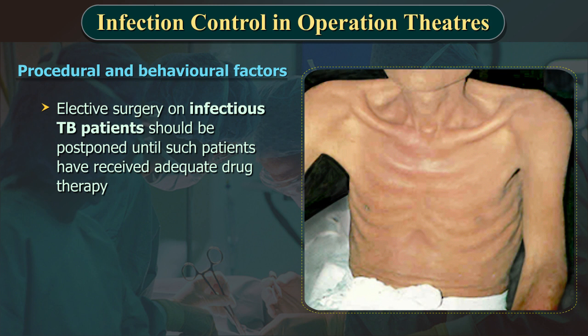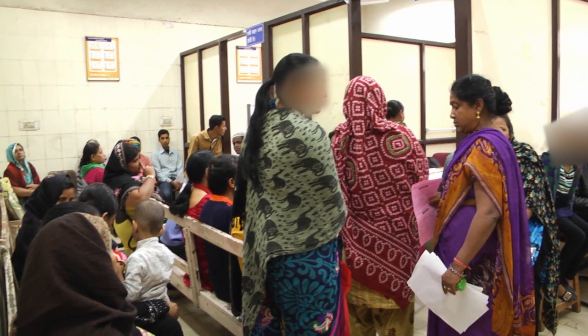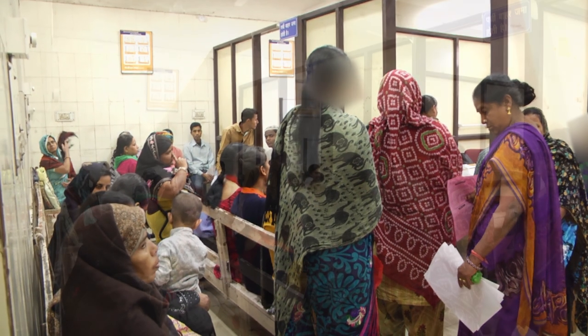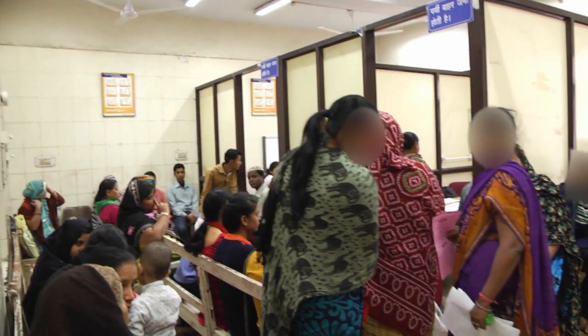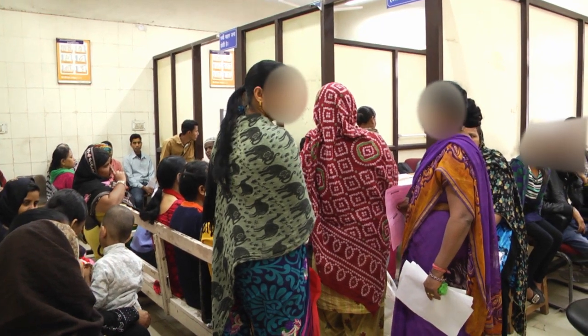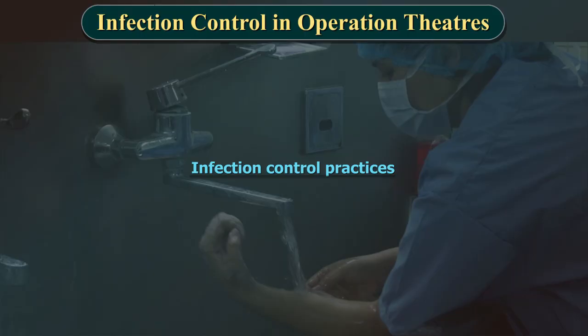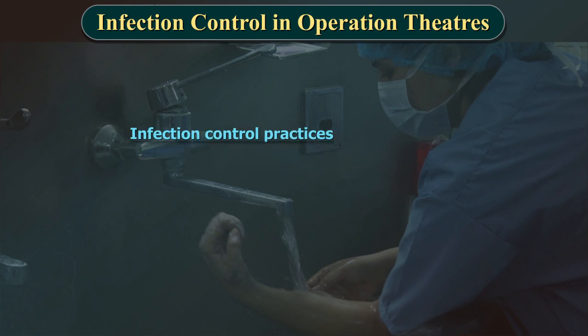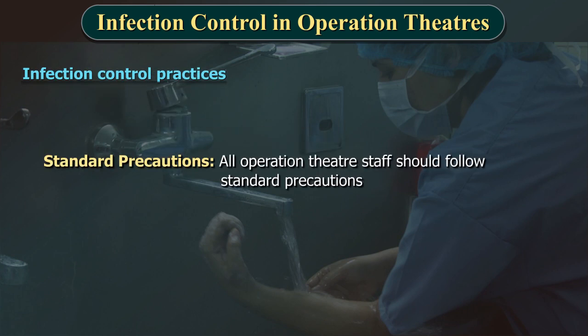Elective surgery on infectious TB patients should be postponed until such patients have received adequate drug therapy. When emergency surgery is indicated for a suspected or diagnosed infectious TB patient, taking specific infection control measures is prudent. All operation theatre staff should follow standard precautions.